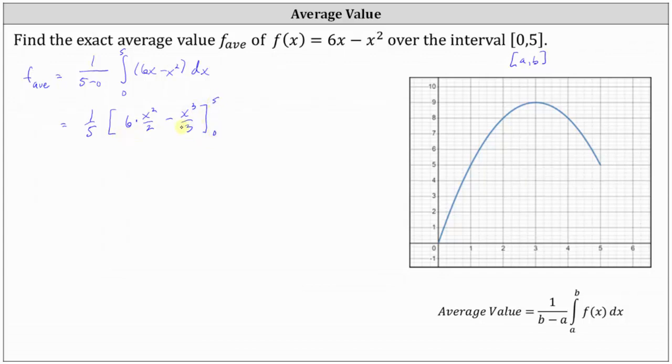Let's simplify the antiderivative. 6 divided by 2 is 3, giving us 3x squared minus, let's write this as 1 3rd x cubed.